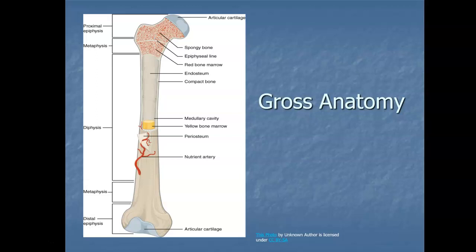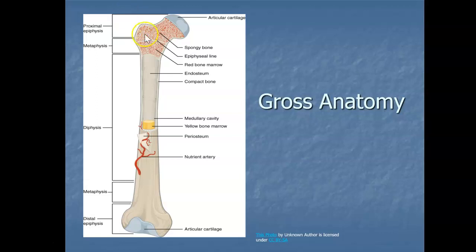Each epiphysis meets the diaphysis at the metaphysis, which is that transition area between the two. This is where your epiphyseal plate is — a layer of cartilage that is growing in the bone, allowing our bones to grow in length. When bone stops growing, usually between 18 and 21 years, the cartilage will eventually be replaced with bone tissue and solidify through.